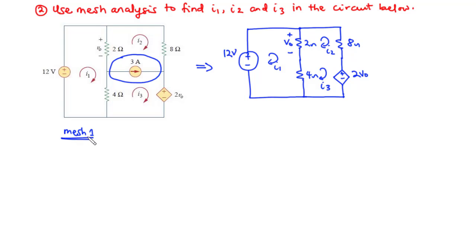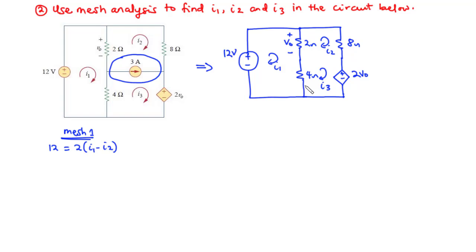According to KVL, the source voltage is equal to the sum of the voltages dropped across the loop. For mesh 1, the source voltage is 12. Going in the clockwise direction, we have current I1 moving in one direction and current I2 flowing opposite to I1. Therefore, we have 2 times (I1 minus I2). Also in the 4-ohm resistor, we have I1 flowing one way and I3 opposing it, giving plus 4 times (I1 minus I3).